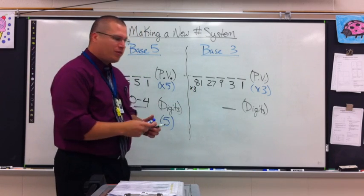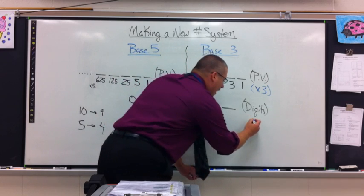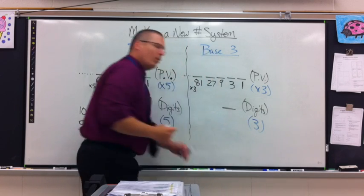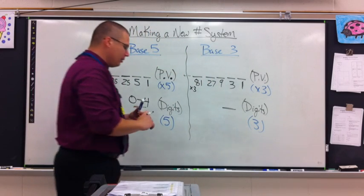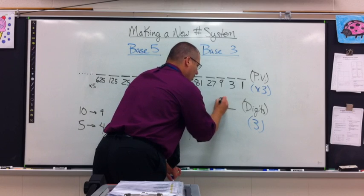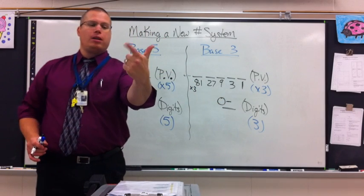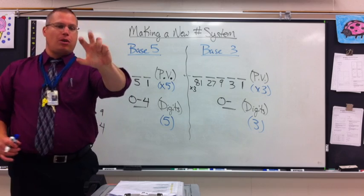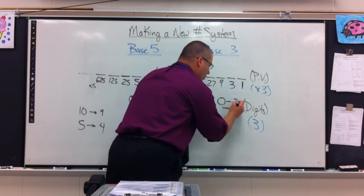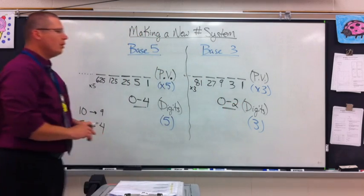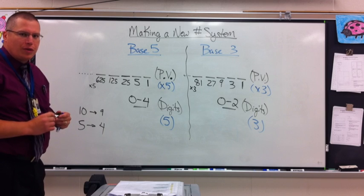How many digits do I get to choose from? Base 3? I'm allowed 3 total. What is the highest digit I'm allowed? I have to have a 0. 0, 1, 2. 3 total. The highest I'm allowed to go to is 2. Well, these are the rules for new base numbers.